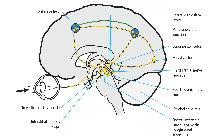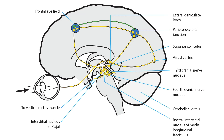If you are looking vertically toward a target you do not see, the signal originates in frontal gaze centers and connects to parietal-occipital gaze centers in both hemispheres.